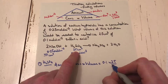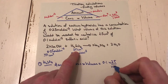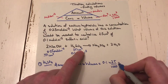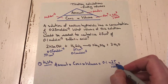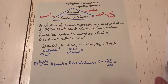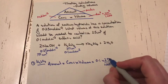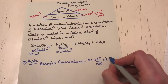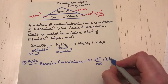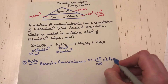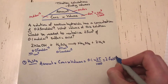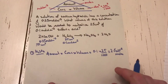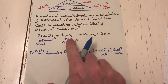Dividing by 1000 to convert cm³ to dm³: amount = 0.1 × (25 ÷ 1000). On the calculator this gives 2.5 × 10⁻³ moles of sulfuric acid. I now know how many moles reacted.